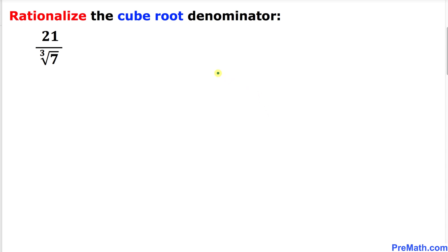Welcome to pre-math. In this video lesson I am going to show you how to rationalize the cube root denominator. As you can see over here, we have 21 divided by cube root of 7.